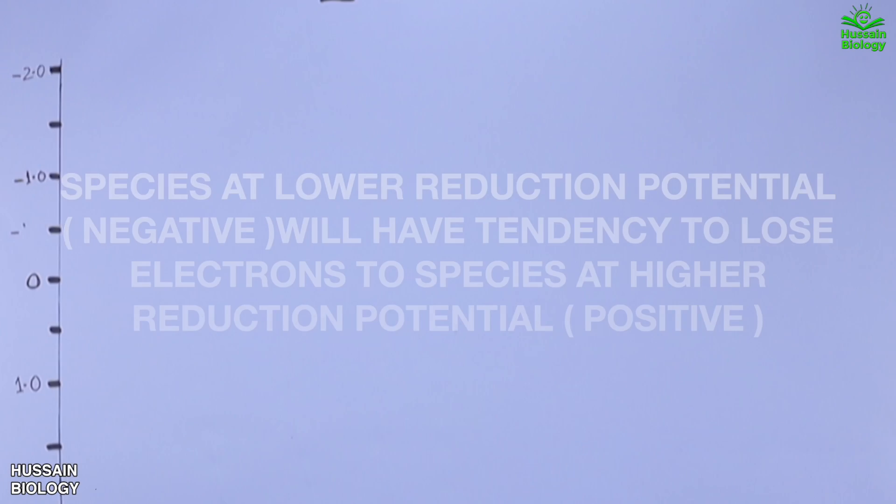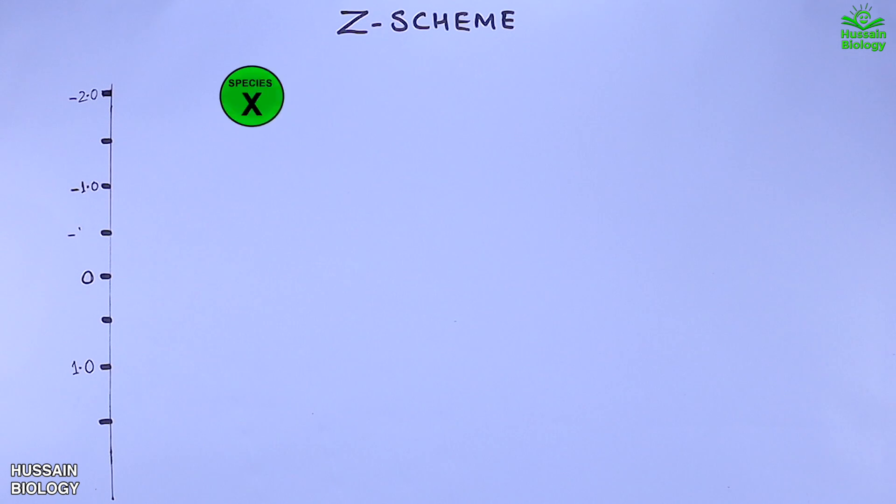Like if we have two species here: species X at minus 2 and species Y at minus 1, then the electrons will flow from species X to species Y, as species Y has more reduction potential than species X. So electron flow is favored towards species Y.